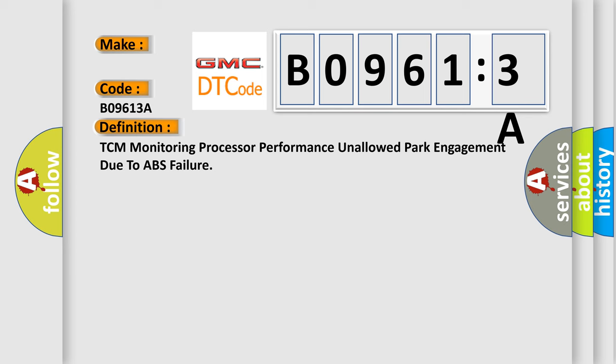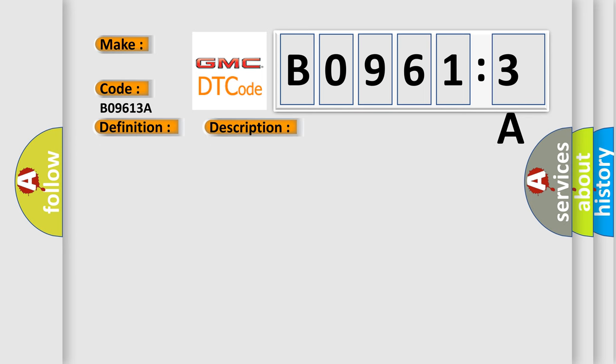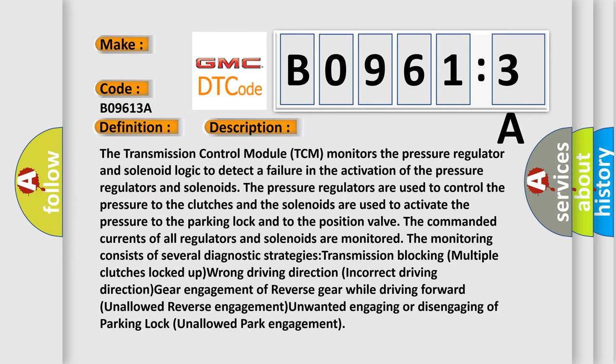And now this is a short description of this DTC code. The transmission control module (TCM) monitors the pressure regulator and solenoid logic to detect a failure in the activation of the pressure regulators and solenoids. The pressure regulators are used to control the pressure to the clutches and the solenoids are used to activate the pressure to the parking lock and to the position valve. The commanded currents of all regulators and solenoids are monitored. The monitoring consists of several diagnostic strategies.